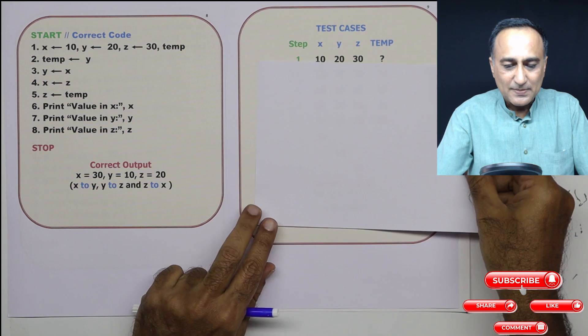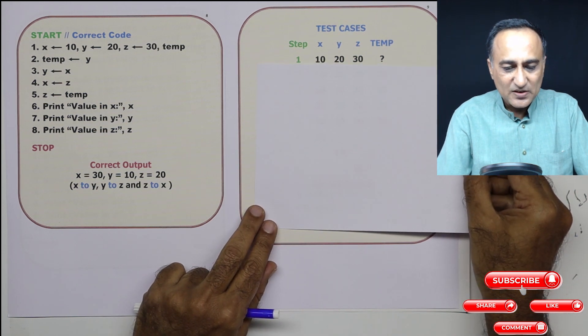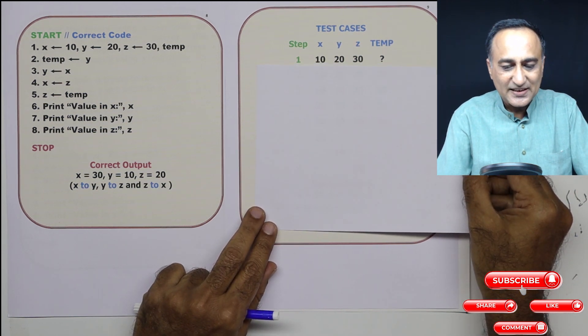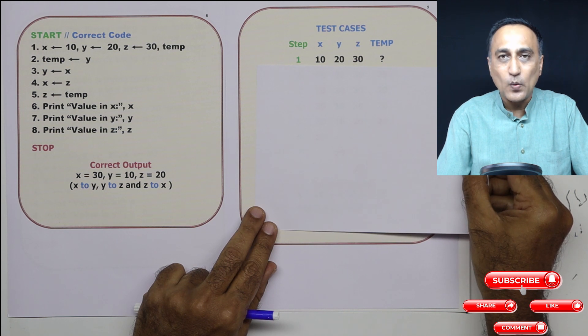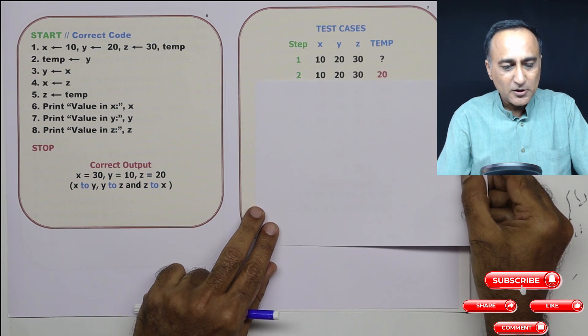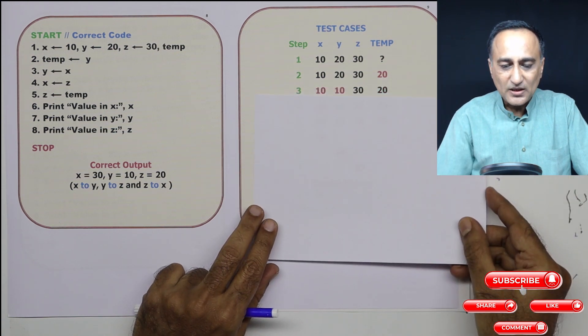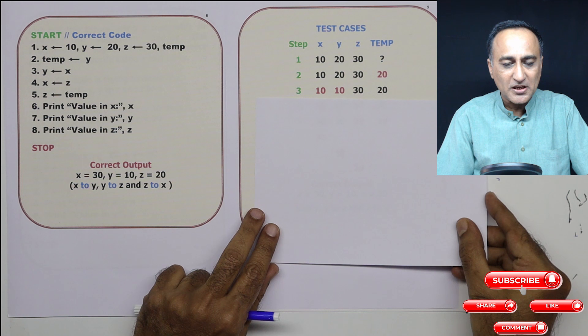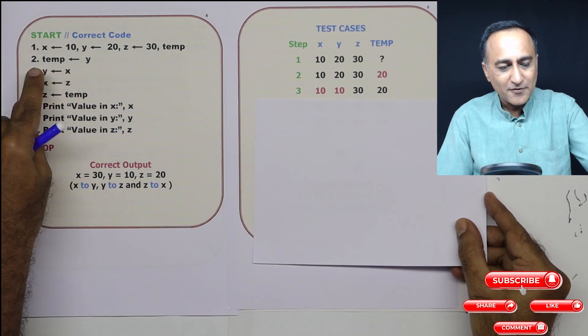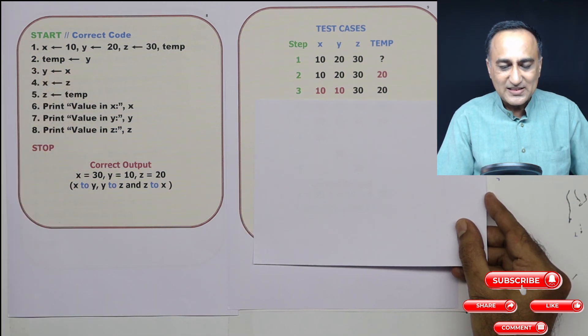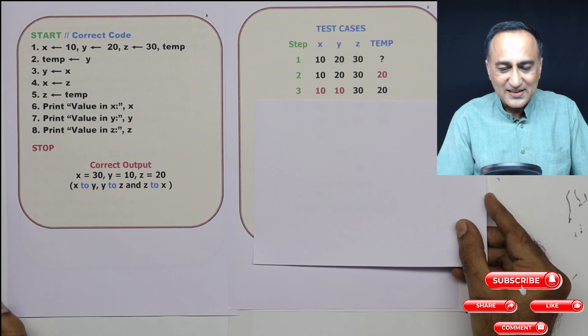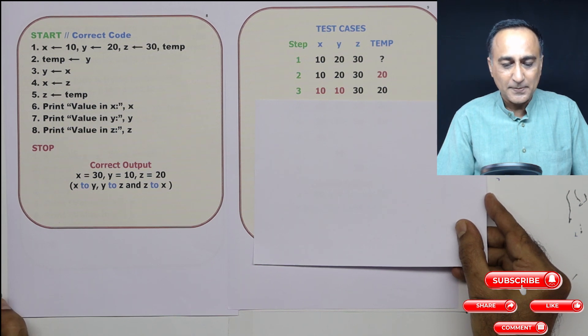So step number one, x is 10, y is 20, z is 30, temp I have not given it any value. At step number two, I give temp the value 20, that's why I've shown it in red. Then what I'm doing is in step number three, I'm copying the value of x to y. That's why x has become 10, y has become 10, z has become 30.